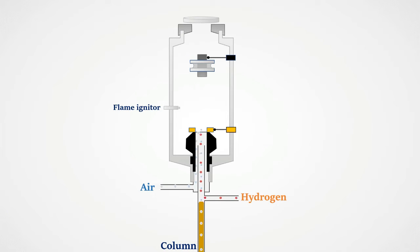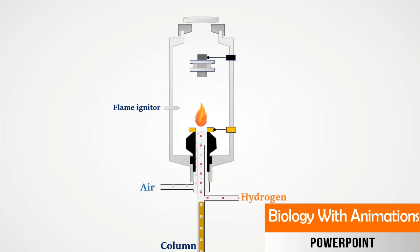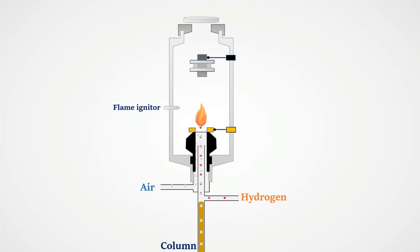The operation of the flame ionization detector is based on the detection of ions formed during combustion of organic compounds in a flame, which is generated by hydrogen and air. To detect these ions, two electrodes are used to provide a potential difference. The positive electrode doubles as the nozzle head where the flame is produced. The other, negative electrode is positioned above the flame.